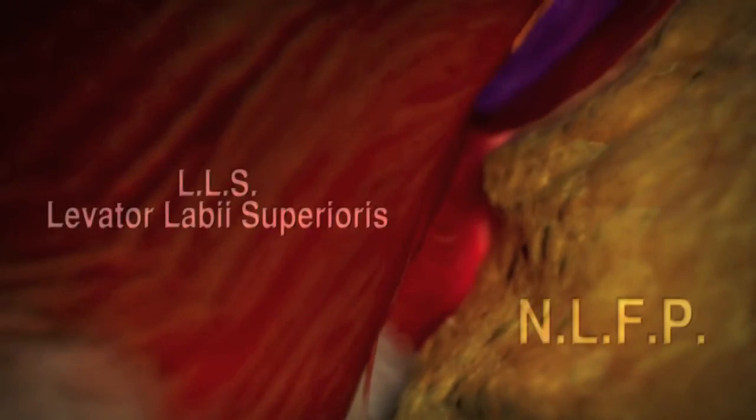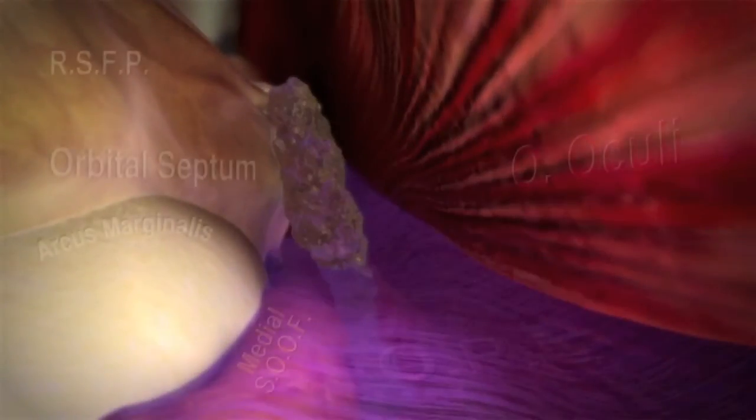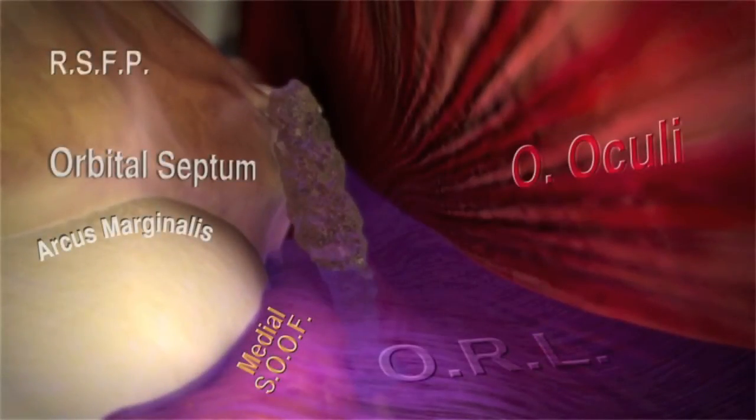Using a tunneling technique, the cannula is passed through the premaxillary space, at which time we can volumize the superior Nasolabial Fat Compartment or efface the tear trough. At this level of the orbital rim, the cannula can pierce the orbital retaining ligament in some instances, but the injector must be cautious not to inject